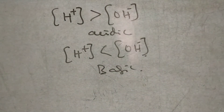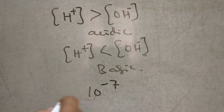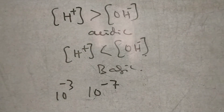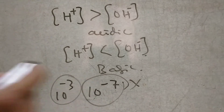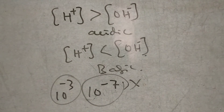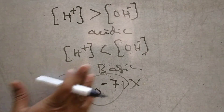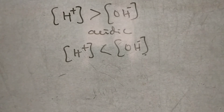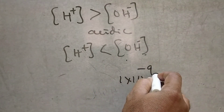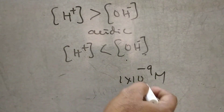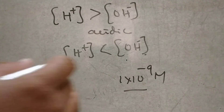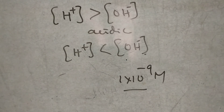Be careful in the calculation of H plus and OH minus ions. For example, suppose you have 10 to the power of minus 7 and 10 to the power of minus 3 — which one is greater? Be cautious: these are minus values. 10 to the power of minus 7 is actually a lesser value than 10 to the power of minus 3. So if OH minus ions are, say, 1 into 10 to the power of minus 9 M, that is greater than 10 to the power of minus 7, so we can call it basic in nature. Be careful in the calculation of H plus and OH minus ions.